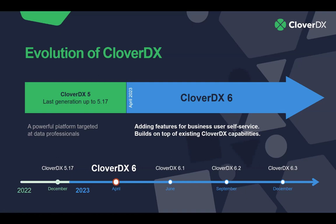What's important to say is that we are building on top of what we've had before. We are not throwing away the Clover that you know, but rather we are adding new functionality on top of it. If you want to upgrade to CloverDX 6, everything that you've built in CloverDX 5 will continue working. You will just have additional functionality that focuses on business users and their self-service needs. As usual, we are keeping our release cadence — one release every three months. So you can expect CloverDX 6.1 at the end of June, then 6.2 in September and December.